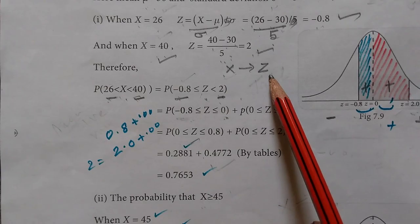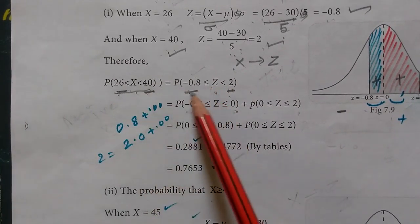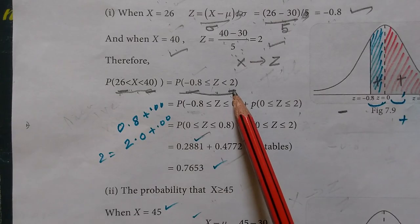Therefore, X value changes to Z value. P(26 < X < 40) equals P(minus 0.8 < Z < 2).